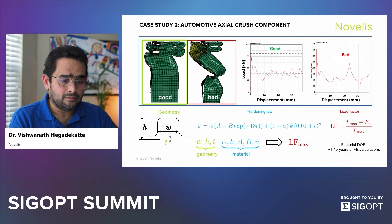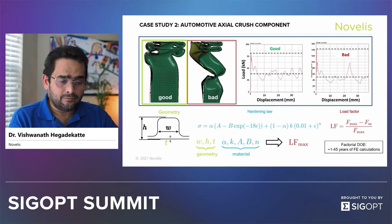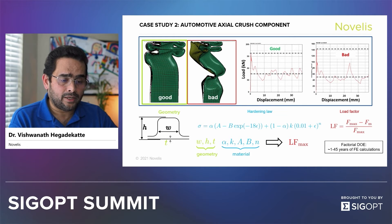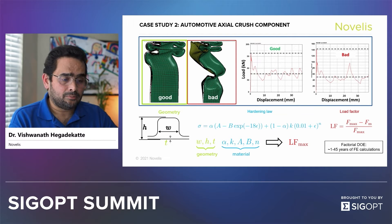For the material, we had to fit these various parameters: alpha, k, a, b, and n. And then for the geometry of the actual crash member, we had to find the width, height, and thickness of the crash member that would give us the highest load factor.